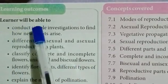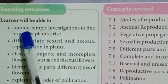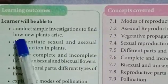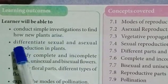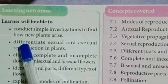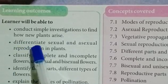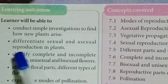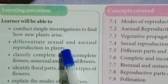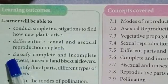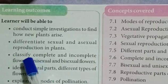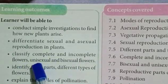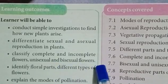Learners will be able to conduct simple investigations to find how new plants arise. Learners will be able to differentiate sexual and asexual reproduction in plants. Learners will be able to classify complete and incomplete flowers, unisexual and bisexual flowers.